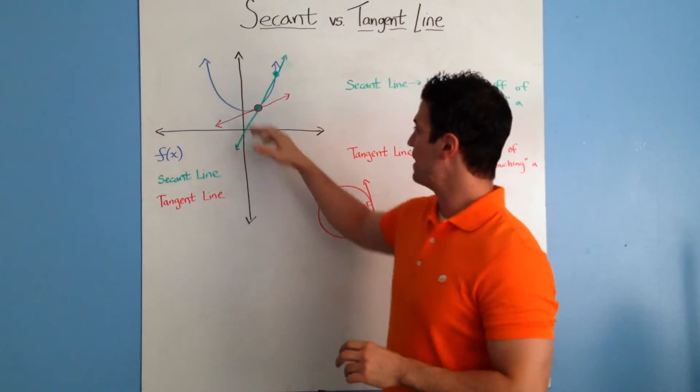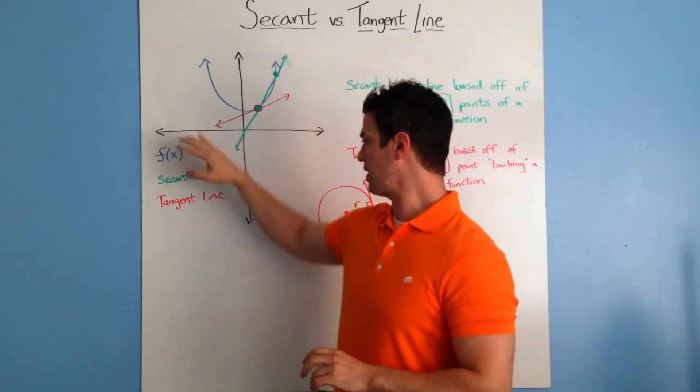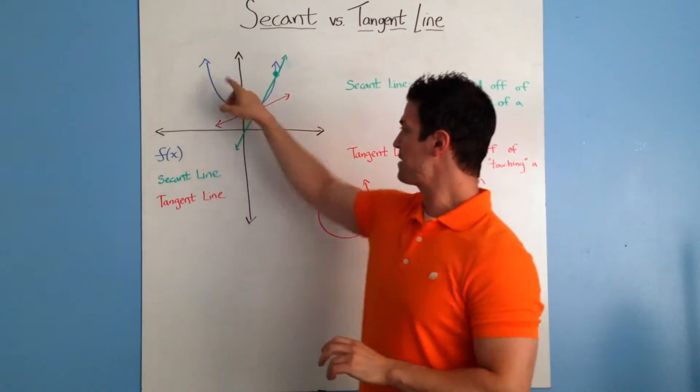I have a graph here that shows a function f(x). It's in blue - I try to color code everything here.